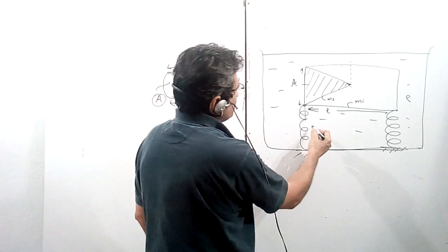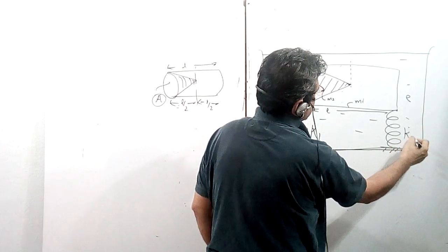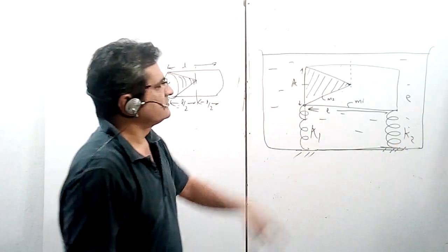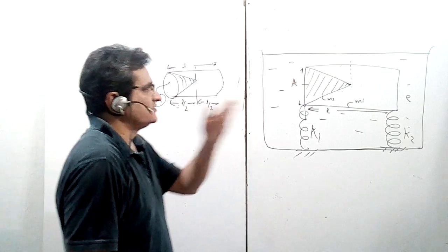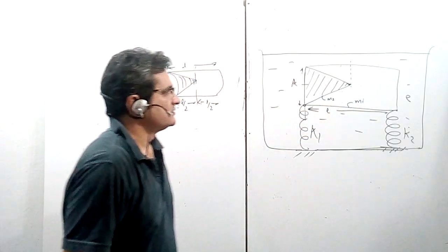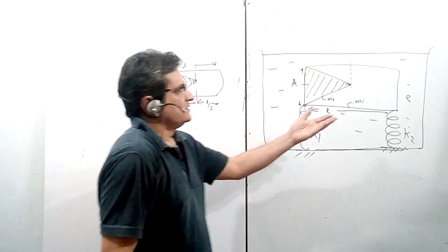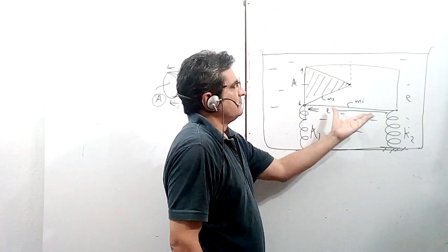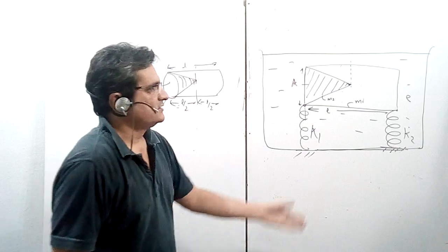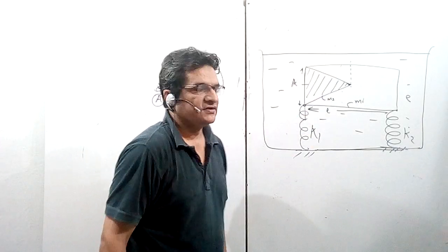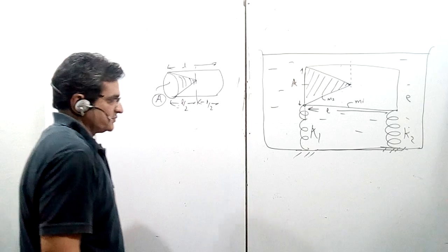There are two springs of spring constants k1 and k2. The whole arrangement is placed in a liquid of density rho. The mass of the combination is enough that it does not float — it tends to sink — and we are holding it using these springs.